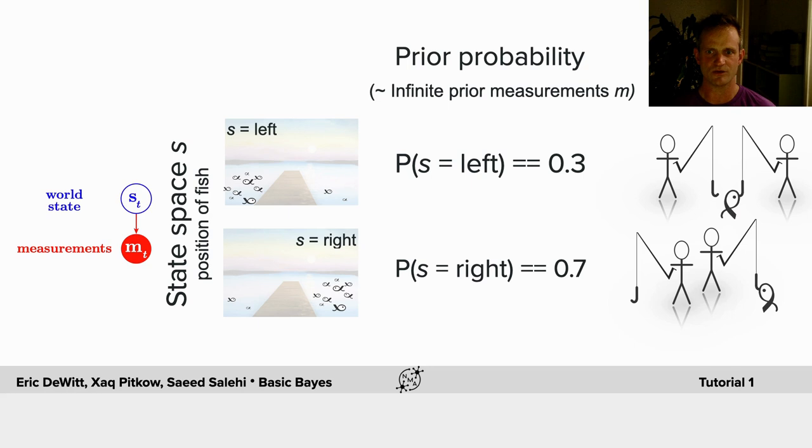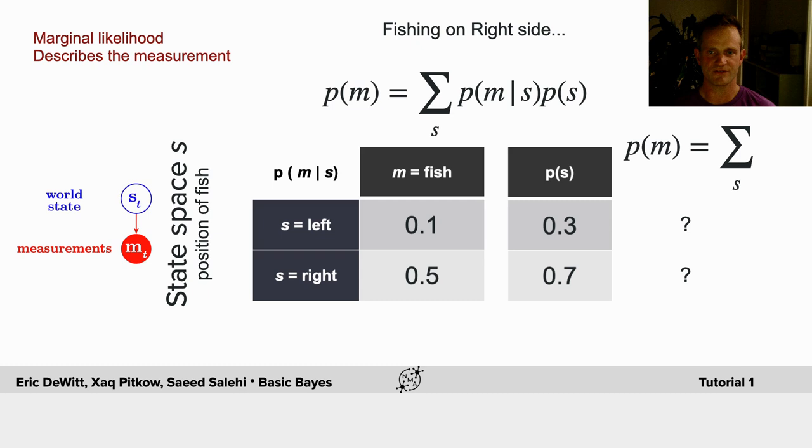We can now think about the marginal likelihood of the measurement, and we're going to need this next. In this case, the probability of a measurement is, let's say, the probability of the measurement being a fish.